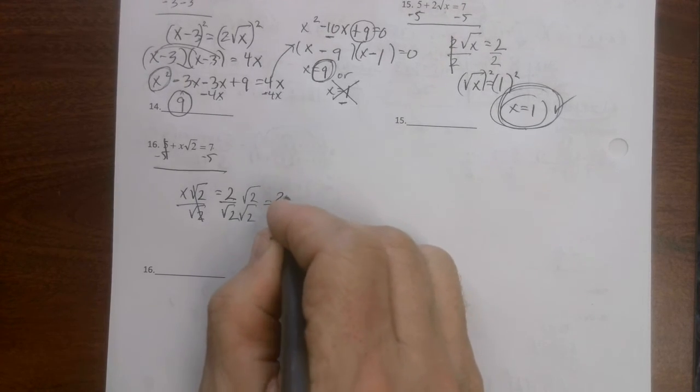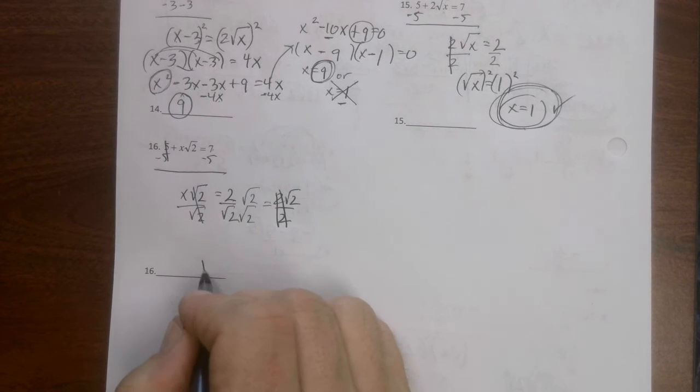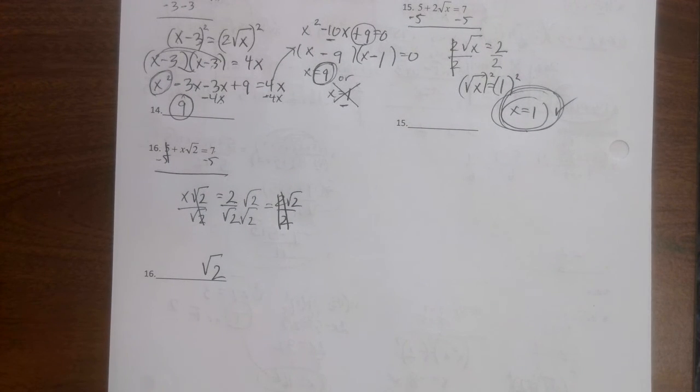Now we got to get the square root out of the denominator, so we get two square root of two over two. These cancel. You end up with the square root of two, and that's it. Good luck on your test.